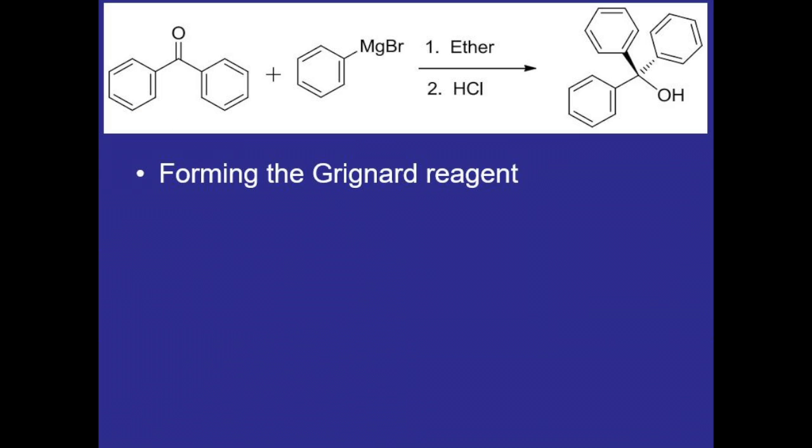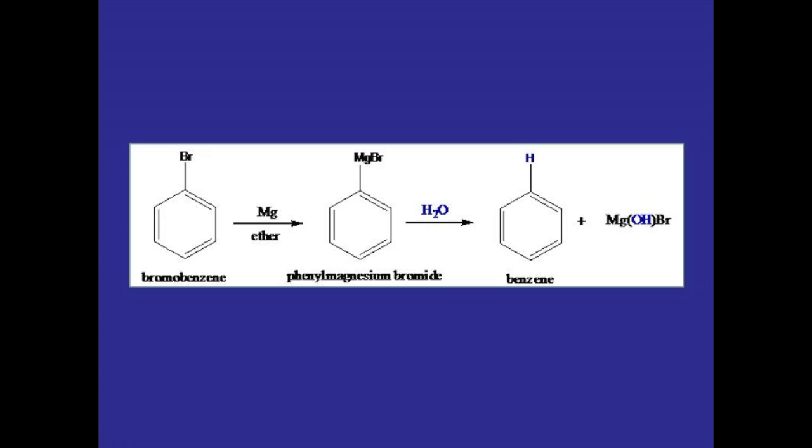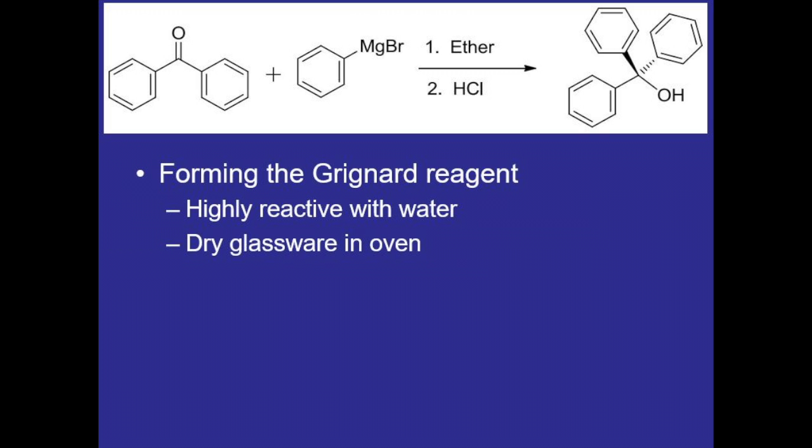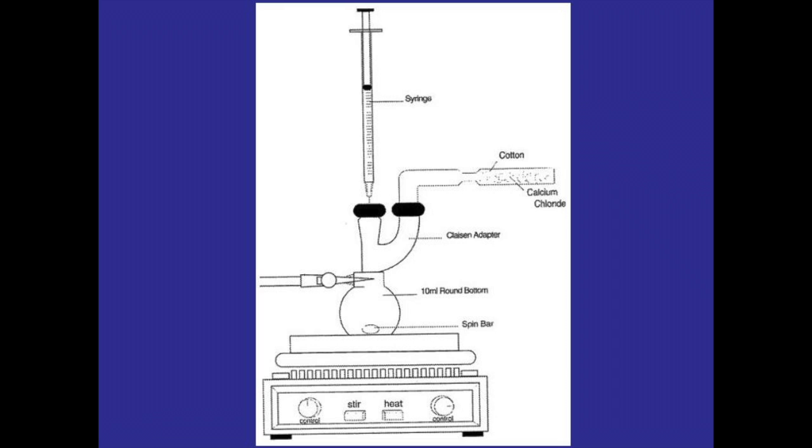For the first step of creating the Grignard reagent, and throughout the process, we need to be careful because it is highly reactive with water. It is an incredibly strong base, and if water is introduced, it'll react with the water instead of benzophenone and form benzene contamination. So before the reaction, we'll be drying all the glassware in an oven, and adding a lot of the reagents to the round bottom flask using a needle and syringe.